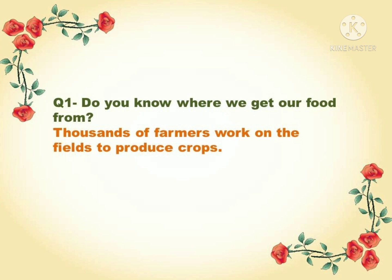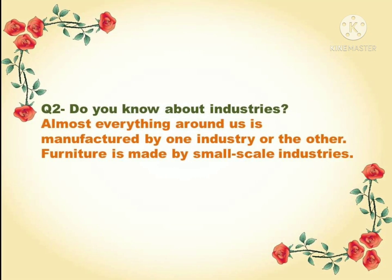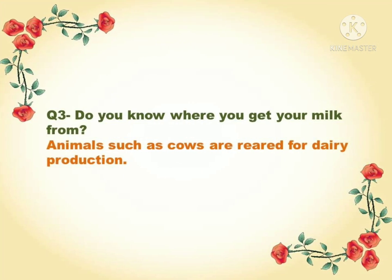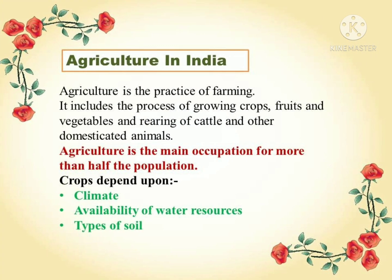Do you know where we get our food from? Thousands of farmers have to work on the fields to produce crops — this is how we get our food. Almost everything around you is manufactured by one industry or the other. Furniture that you use at your house is also made by small scale industries. Animals such as cows are reared for dairy production. Agriculture is the practice of farming — when people grow crops, fruits, or vegetables on farms, that is called farming, that is agriculture. People who rear cattle and other domesticated animals are also considered to be engaged in agriculture.